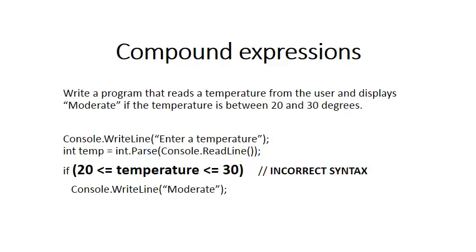In a C# program, if we want to apply the principles from maths, we would want to have an if statement where we say 20 less than or equal to temperature less than or equal to 30, then print 'moderate'. But notice that kind of syntax in C# is incorrect — we cannot write it as we do in maths.